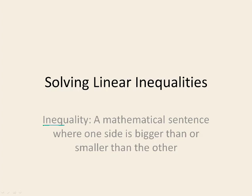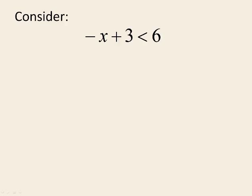An inequality is a mathematical sentence where one side is either bigger than or smaller than the other side. We're not dealing with two sides which are the same as in an equation. Looking at the inequality negative x plus 3 is less than 6, the pointed end faces the left-hand side, so the left-hand side is less than and the right-hand side is the open side of the inequality sign. So we say that 6 is bigger than negative x plus 3.